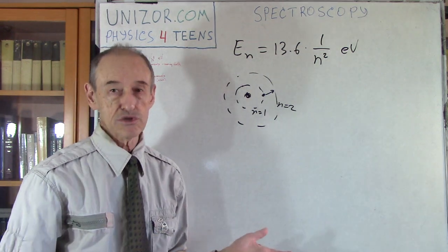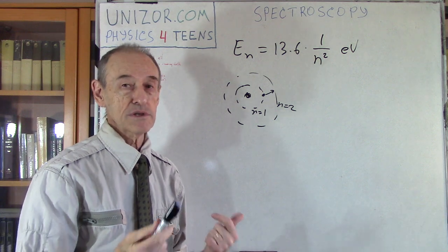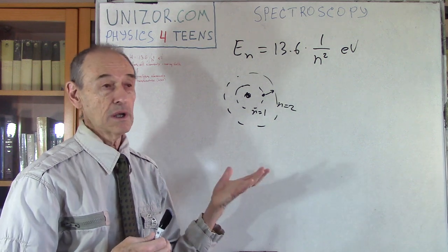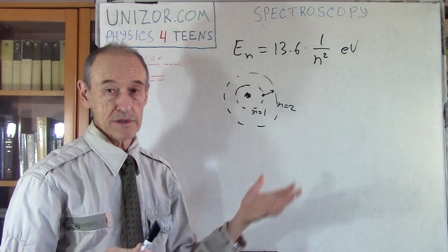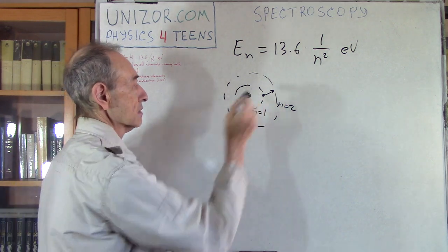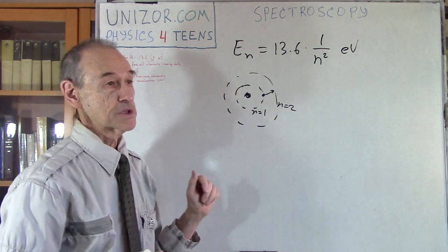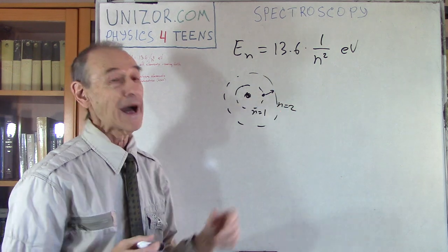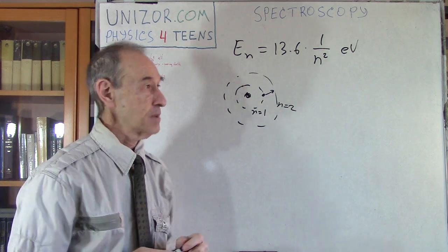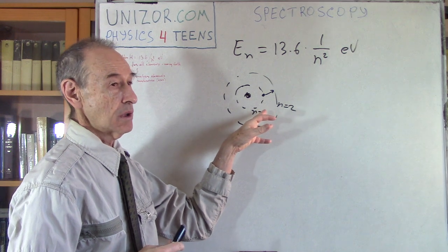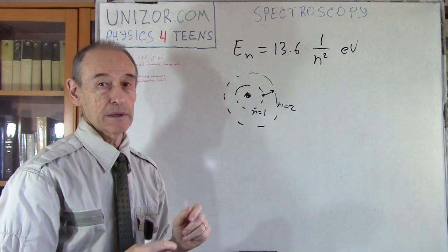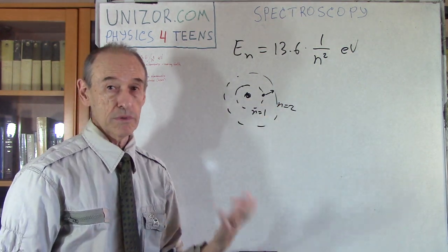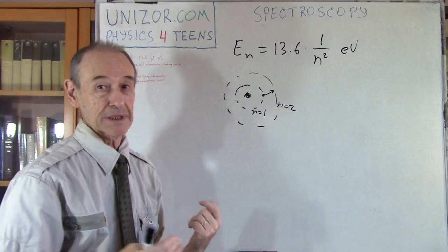It can be radiation of whatever frequency — it can be a low frequency like heat, or a high frequency like gamma rays, or whatever else. It doesn't really matter. Whenever a certain amount of energy goes into this particular atom, the electron absorbs it and moves to a higher level of energy. So we give it some more energy, and that energy is used by the electron to move to another orbit further from the nucleus, increasing its potential energy.